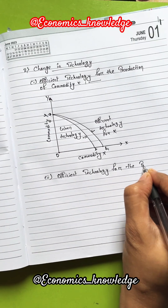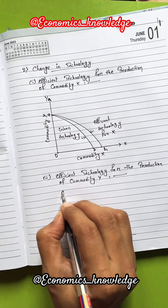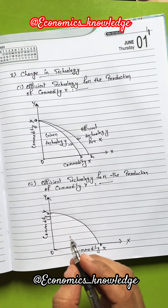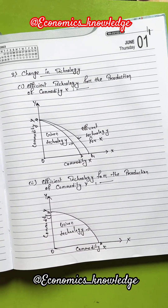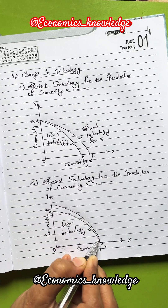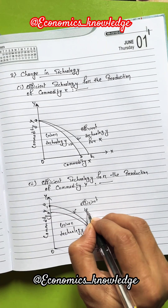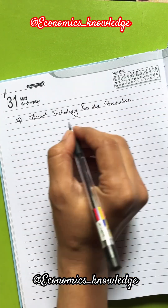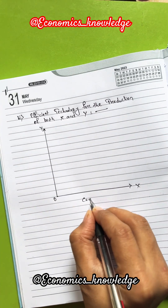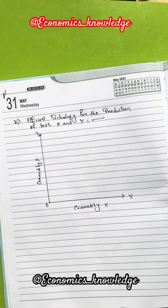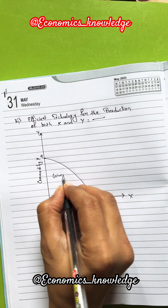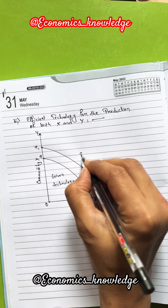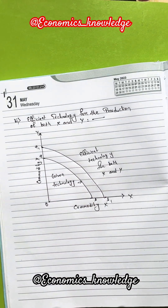Next, we have efficient technology for the production of commodity Y. Commodity X and commodity Y are given. This is the production possibility curve with the given technology. This curve will shift to the right to the A1B1 curve because of efficient technology for the production of both commodity X and commodity Y.